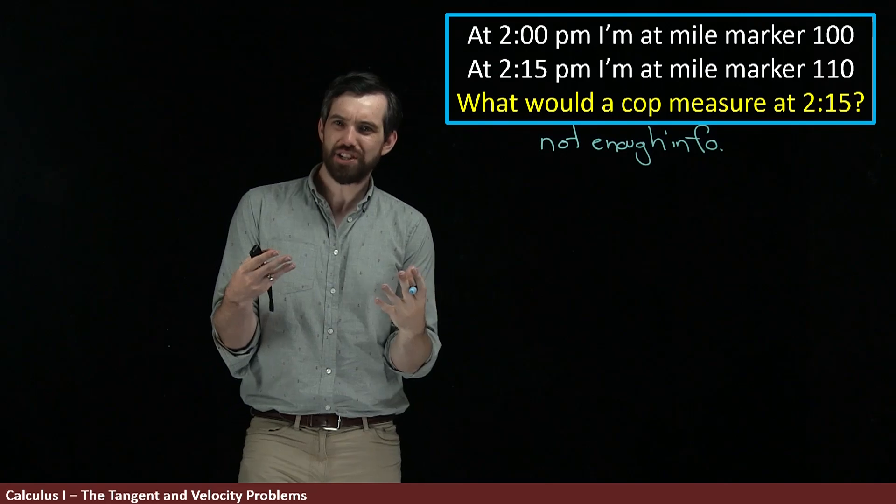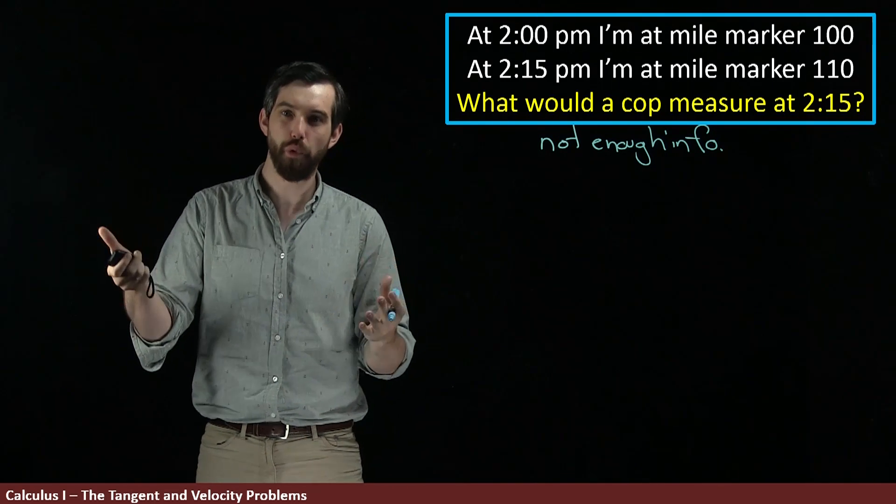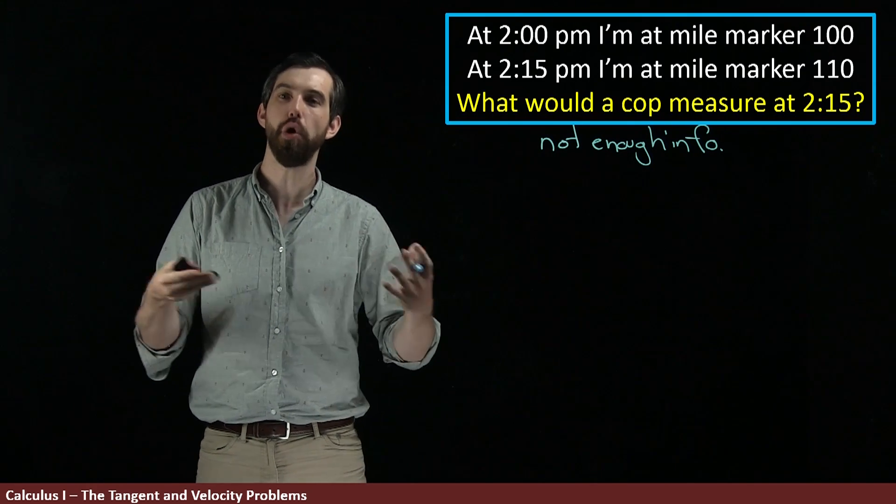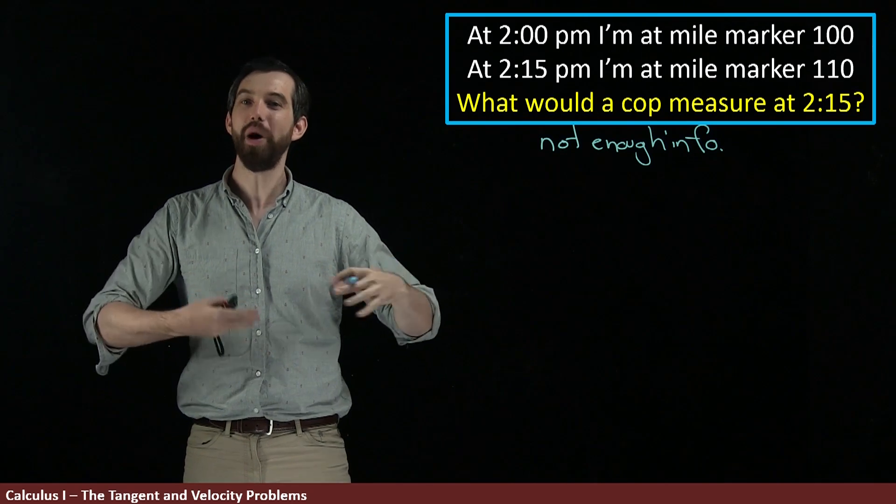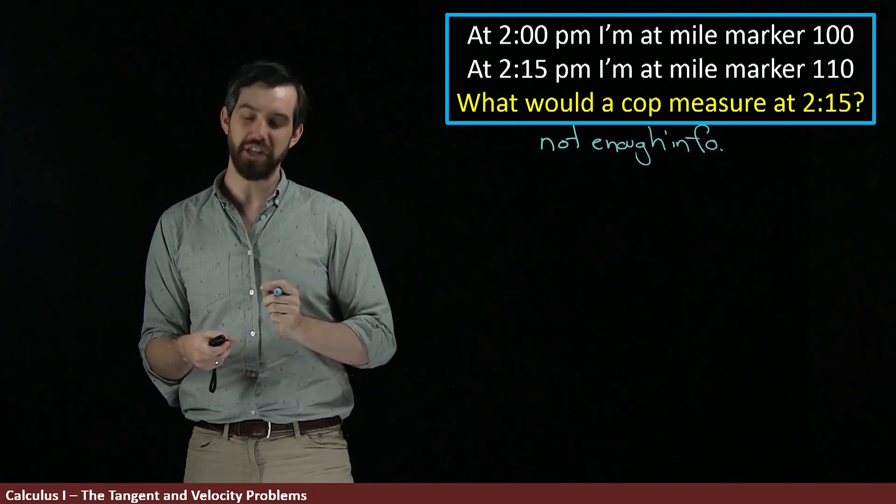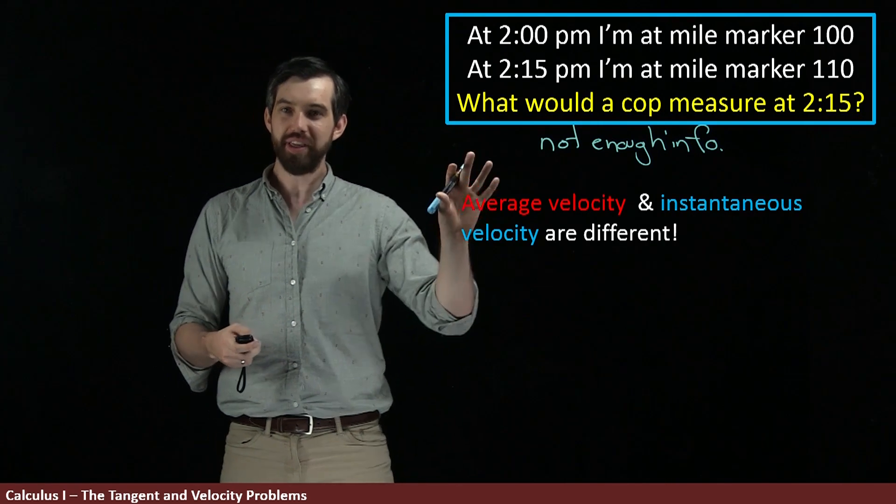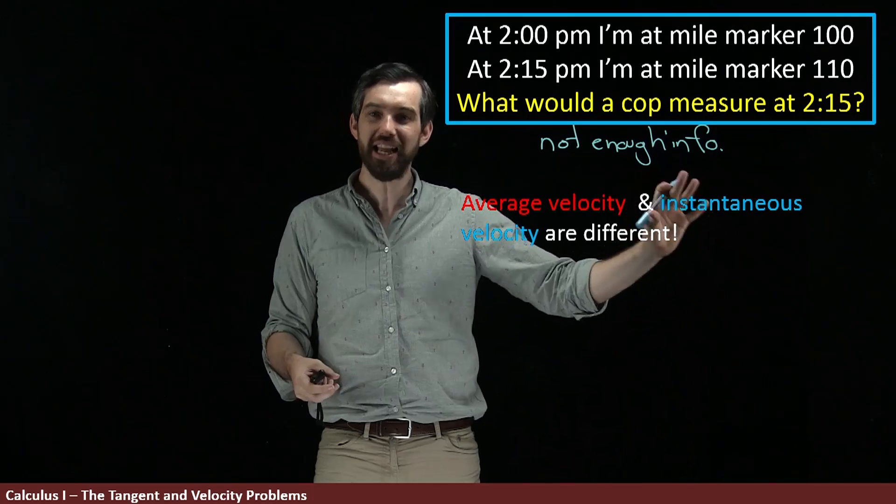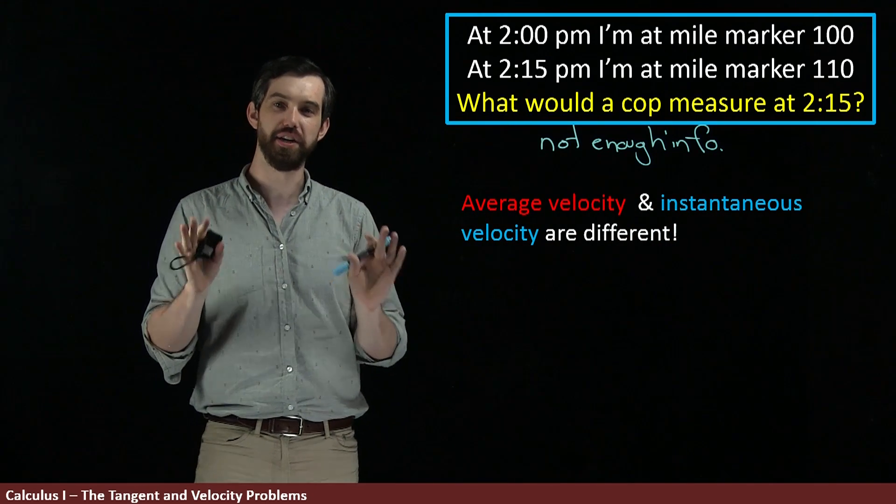It turns out that there's actually two different concepts here. The one that we had seen before was called the average velocity and it was over an interval. But what we're really asking here when I say what is the cop measuring at 2:15 precisely is something called the instantaneous velocity. And that the average velocity over an interval and the instantaneous velocity at one exact time are indeed different things.